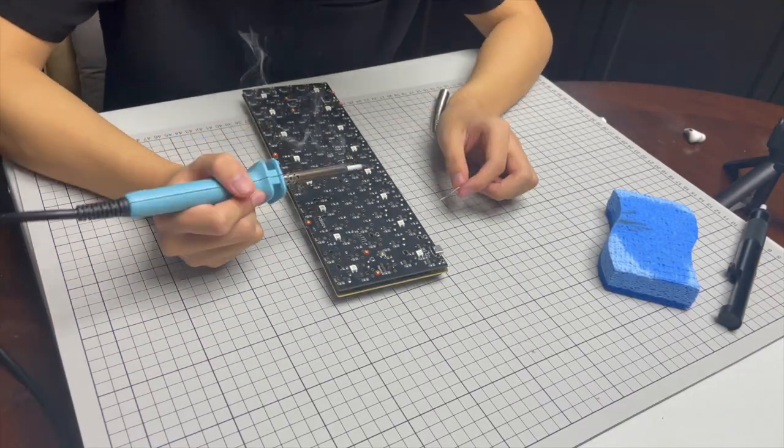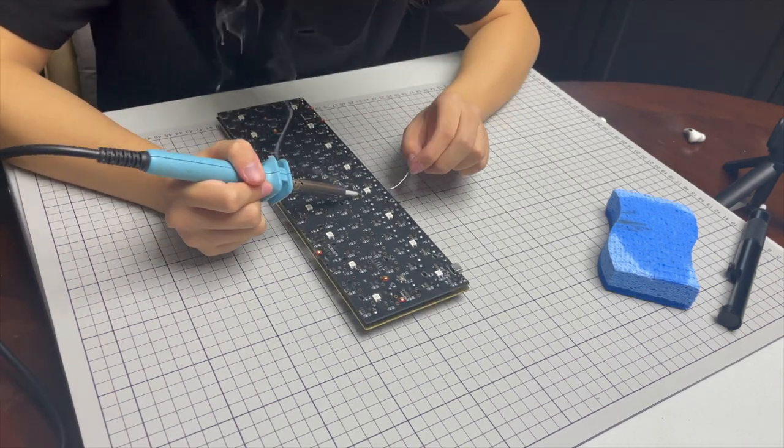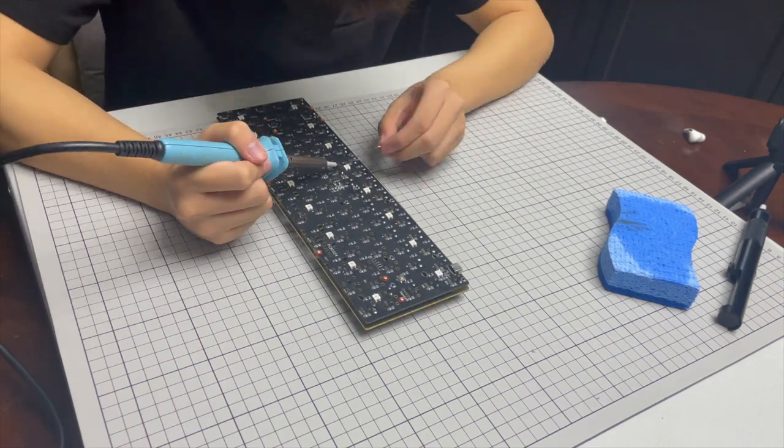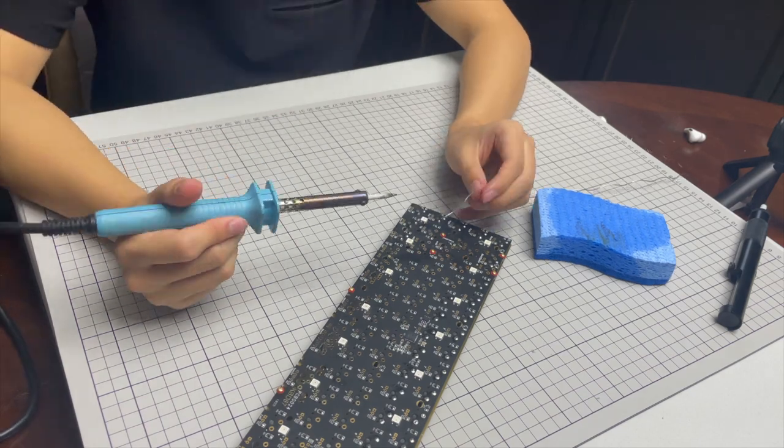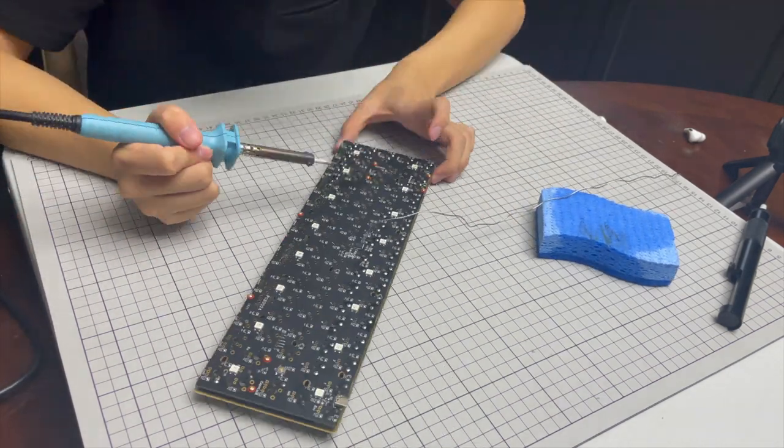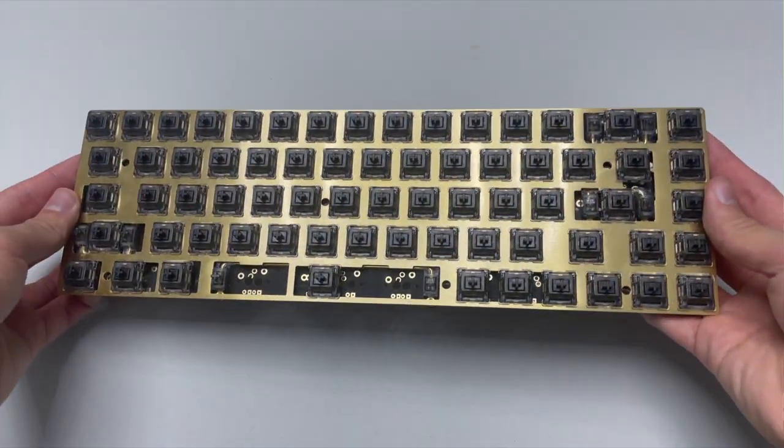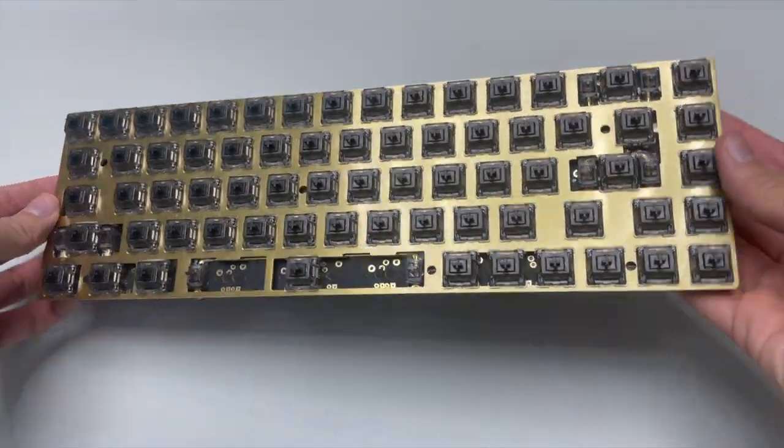A better option would be a hot swap PCB. It doesn't require any soldering, but like all good things, it comes with a con. Hot swap PCBs are generally more expensive and the clamps can get loose if you replace the switch often, thus leading to a poor connection and increased minor wobbliness during typing.